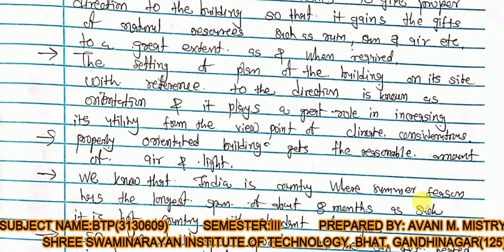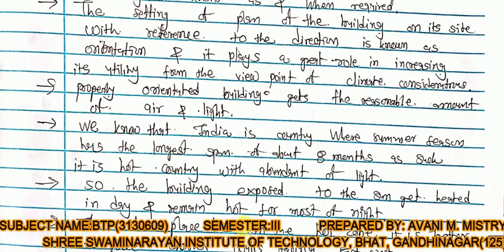India is a country where the summer season has the longest span of about 8 months. As such, it is a hot country with an abundance of light. A building exposed to the sun gets heated during the day and remains hot for most of the night.